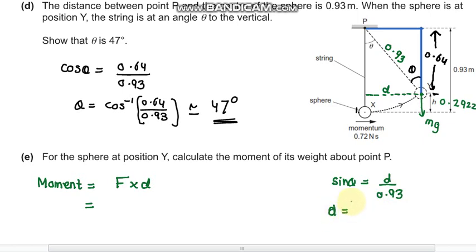So d becomes sine 47 multiplied by 0.93, which makes d equals 0.68 meters. So let's plug in the values.